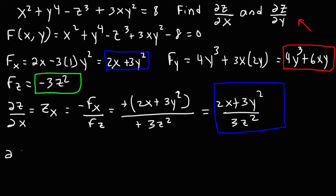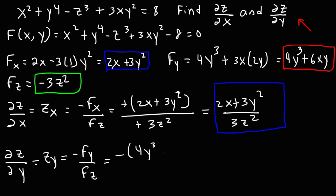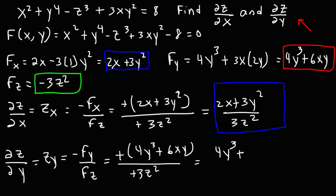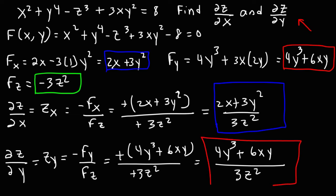Now let's calculate the partial derivative of z with respect to y. That's z sub y, and that's equal to negative f sub y over f sub z. F sub y is 4y cubed plus 6xy, and f sub z is negative 3z squared. Once again we can cancel the negative sign, so it's going to be 4y cubed plus 6xy over 3z squared. That's how we use the implicit function theorem to get these two partial derivatives.